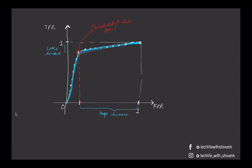This curve between TPR and FPR is known as the ROC curve, and ideally we would want an ROC curve like the yellow line shown. The closer the ROC curve is to the yellow line, the better it is, because that means we have not compromised too much on TPR but still achieved a quite low FPR.